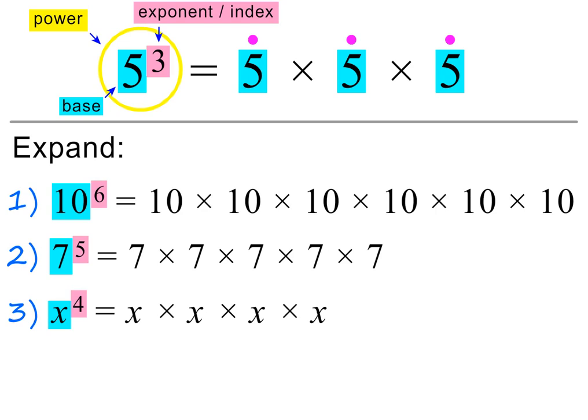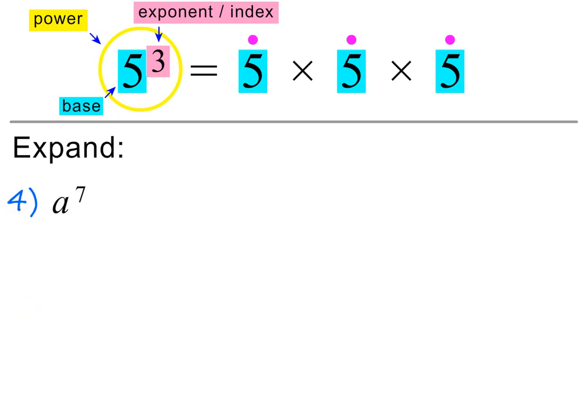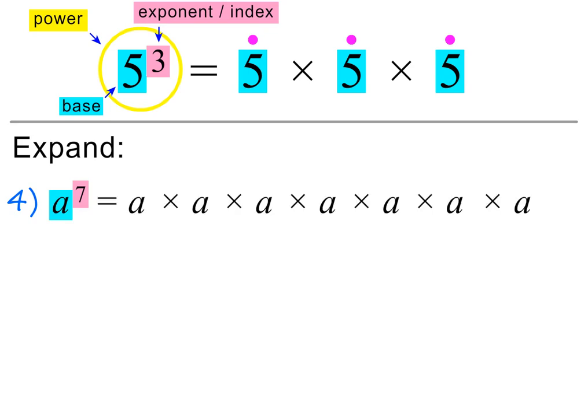Please pause if you need to. In the next example, we are asked to expand a to the power of 7. The base is a, which can again be any number, and the exponent is 7. So we need to multiply a by itself 7 times.